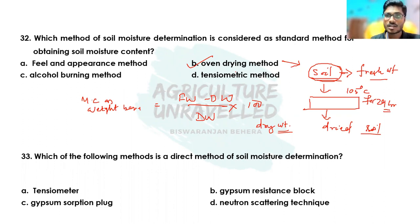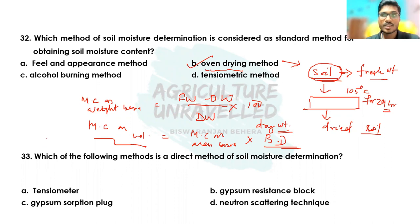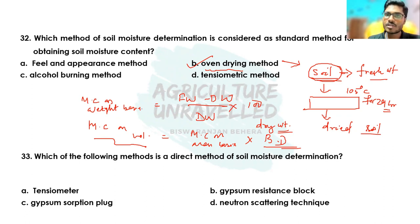During the oven drying method, soil moisture can be expressed on a weight basis (mass basis) or volume basis. The soil moisture content on a volume basis equals moisture content on mass basis multiplied by bulk density. This volumetric moisture content is the standard method of expression. So the standard method is the oven drying method and the common method of expression is on a volumetric basis.